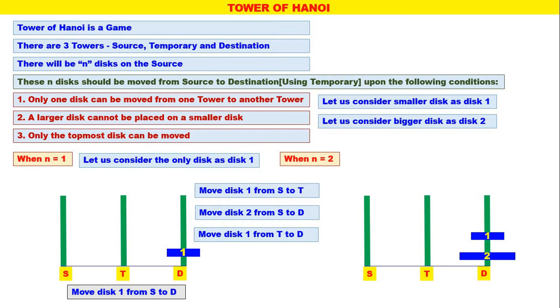So we have seen two examples: when n is equal to 1, how to move, and when n is equal to 2, how to move from Source to Destination.